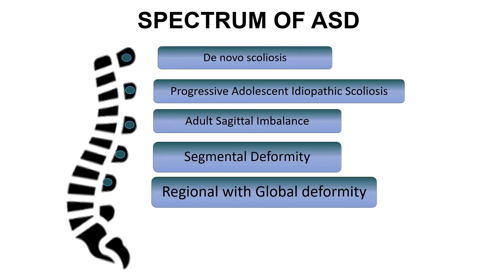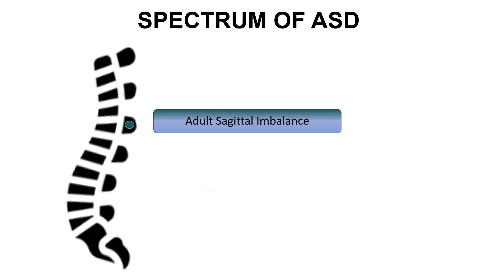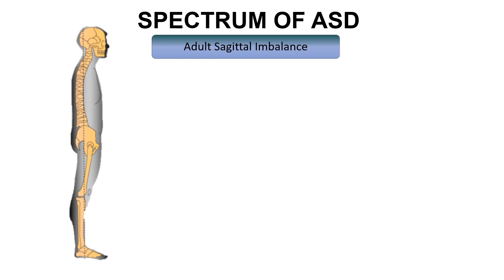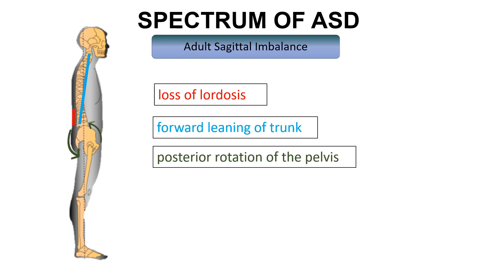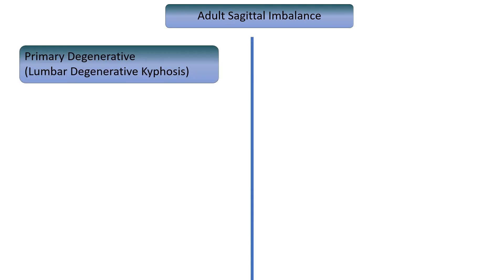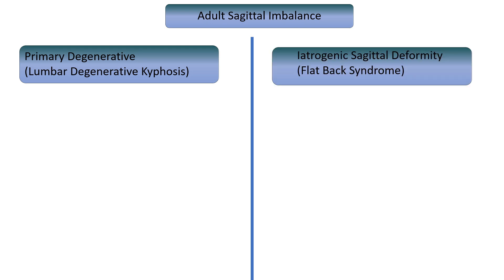With the important effects that sagittal plane deformity exerts on health-related quality of life, and with the recognition of lumbar lordosis as a key driver of adult spinal deformity, another category in the spectrum emerged. Adult sagittal imbalance can be summarized as the spine losing its sagittal curvature, manifesting as loss of lumbar lordosis, forward leaning of the trunk, and posterior rotation of the pelvis. Diminution of lumbar lordosis can be caused by several factors including degenerative changes and iatrogenic changes.